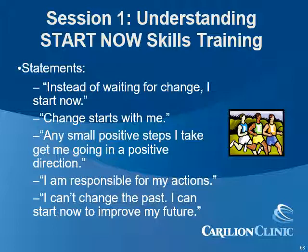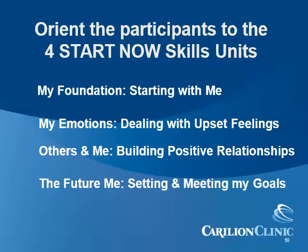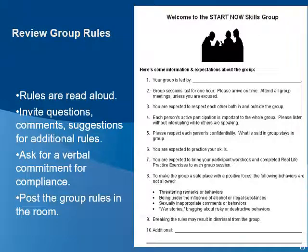Here we set the groundwork for the tools participants will utilize to effectively make changes in their lives. In the early stages of Unit 1, we will orient participants to the four units covered previously in this presentation. You can show the map of how the group will progress from focusing on themselves and their emotions, to working on relationships, and ultimately goal setting for their future. During the first session and future sessions for open groups, review group rules — encouraging one or alternating group members to read each rule and taking time for any questions, suggestions, or necessary discussion.